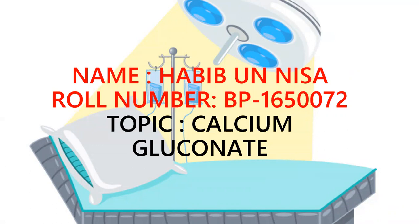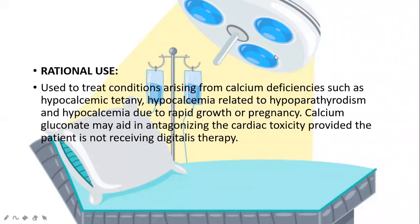What is calcium gluconate? Calcium gluconate is a mineral supplement and medication. It is used by injection into a vein to treat low blood calcium, high blood potassium, and magnesium toxicity. Supplementation is generally only required when there is not enough calcium in the diet.